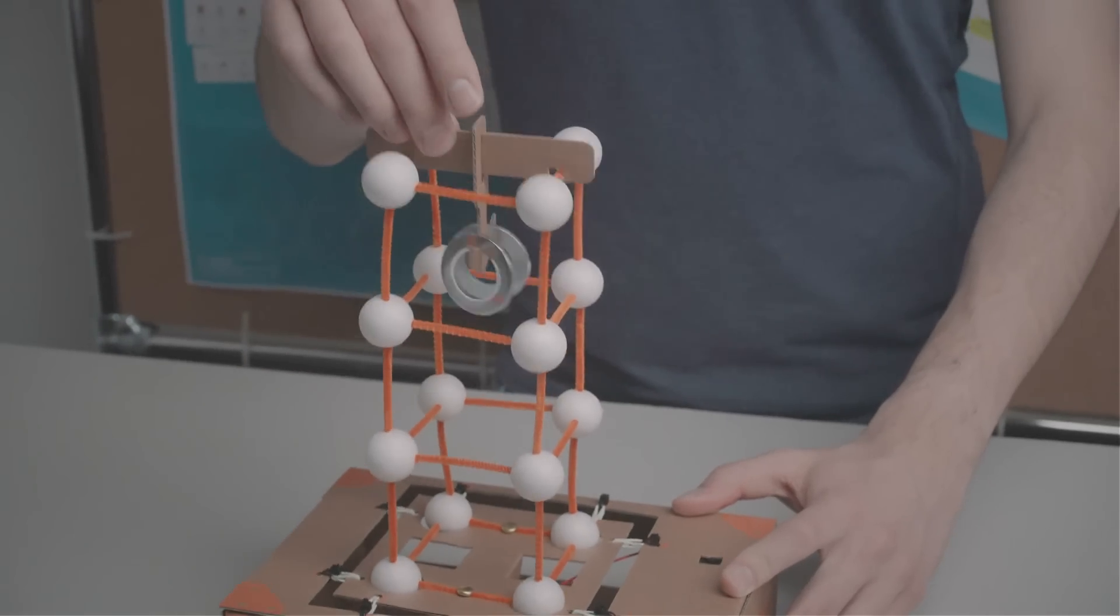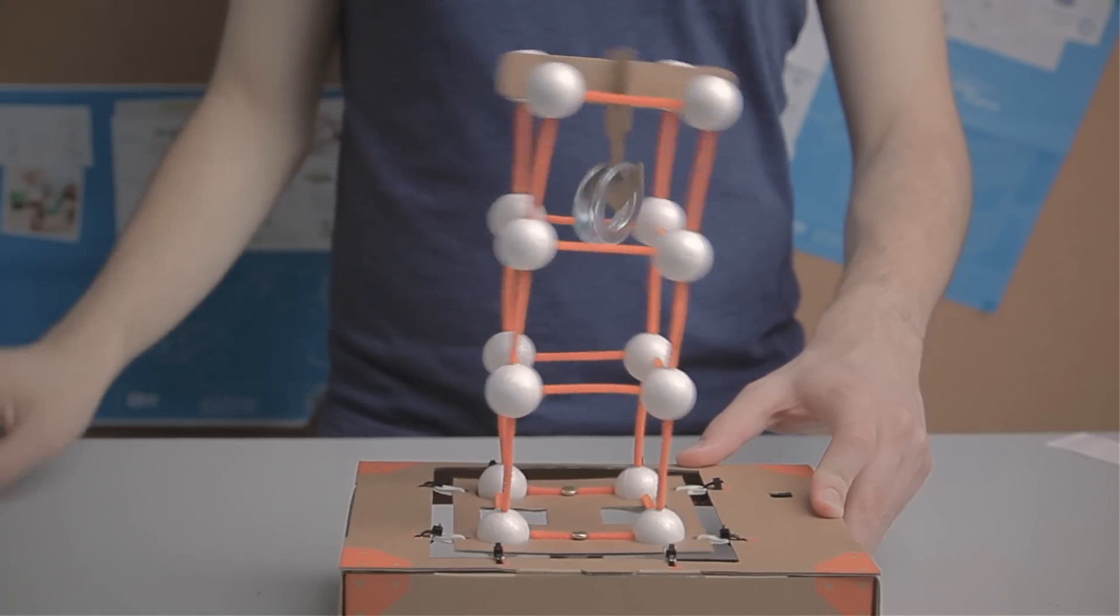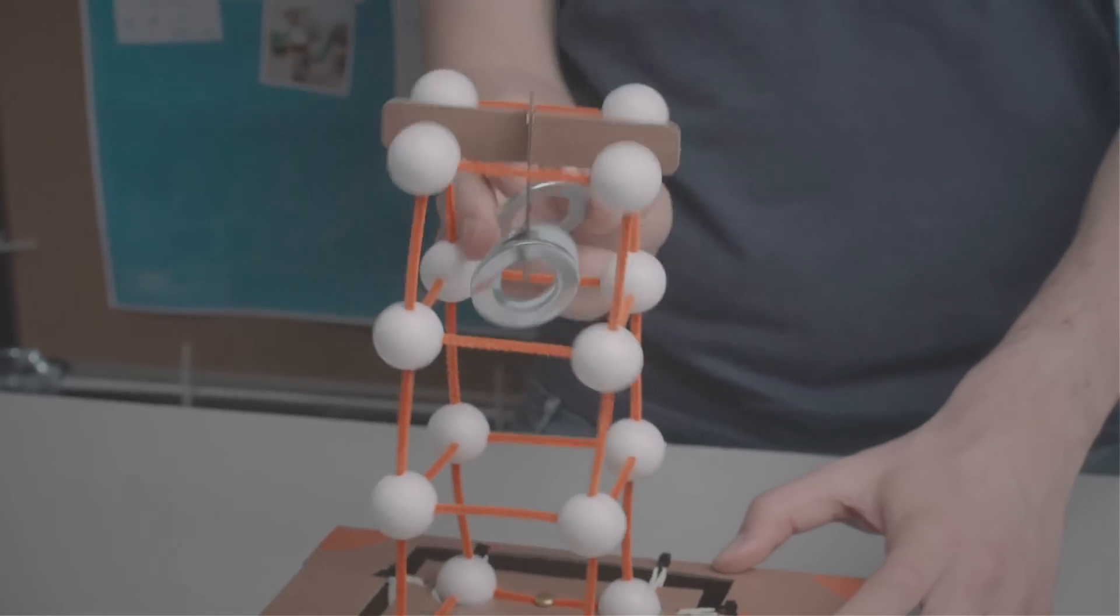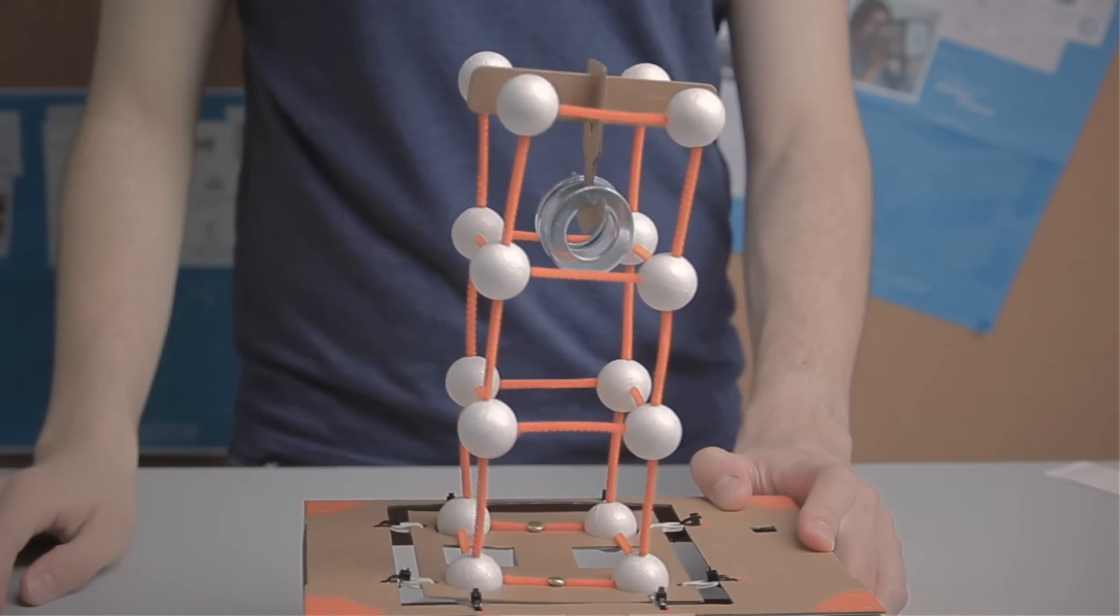Tinker with your shake table by adding and removing the damper from the top of your structure. You can try adding washers to make your damper heavier, and even try perfecting your structure so that it can hold all four washers.